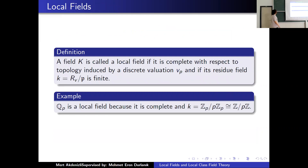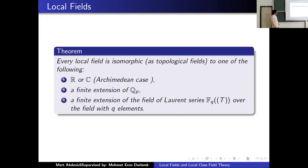We define a local field as a field which is complete with respect to the topology induced by a discrete valuation, and whose residue field is finite. By residue field, I mean the valuation ring quotient by its maximal valuation ideal. Q_p is a local field because it is complete and its residue field is a finite field. There is a theorem which classifies all local fields: if it is Archimedean, it's R or C; if not, depending on the characteristic, it's a finite extension of Q_p or a finite extension of the field of Laurent series over a finite field.